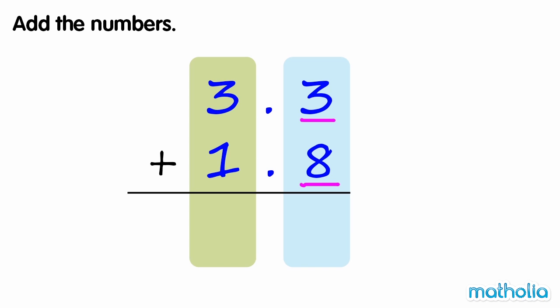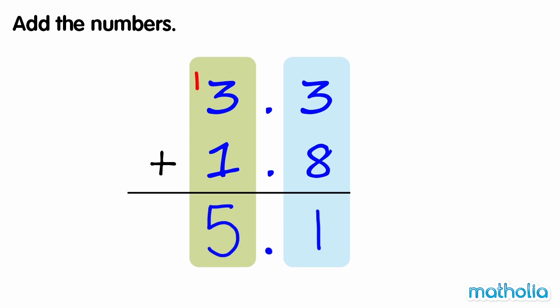Regroup 11 tenths into 1 tenth and 1 one. Remember to write the decimal point. Now we can add the ones. 1 one plus 3 ones plus 1 one equals 5 ones. So 3.3 plus 1.8 equals 5.1.